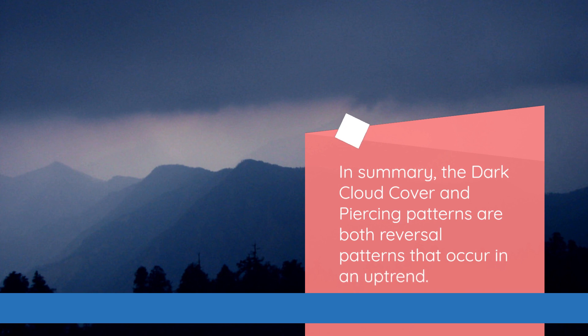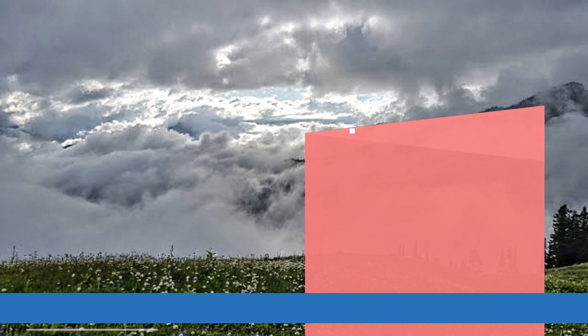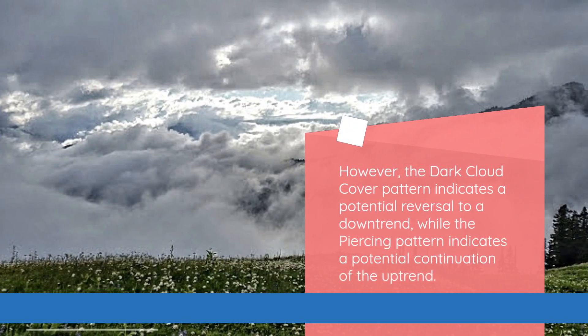In summary, the dark cloud cover and piercing patterns are both reversal patterns that occur in an uptrend. However, the dark cloud cover pattern indicates a potential reversal to a downtrend, while the piercing pattern indicates a potential continuation of the uptrend.